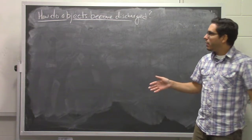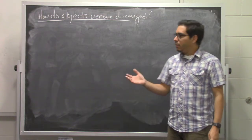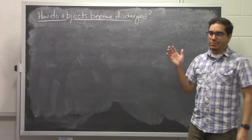Okay, in the last video we talked about how objects become charged. Now what we're going to do is talk a little bit about how objects become discharged.